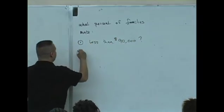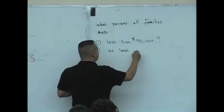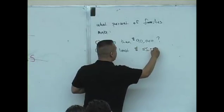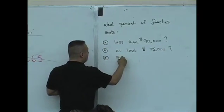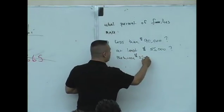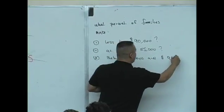Two, at least 55,000 per year. Three, between 55,000 and 90,000.